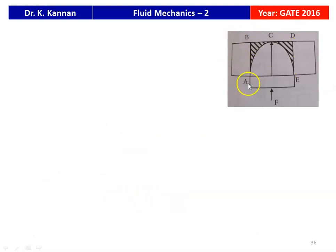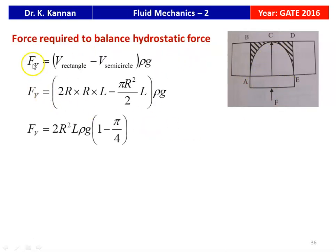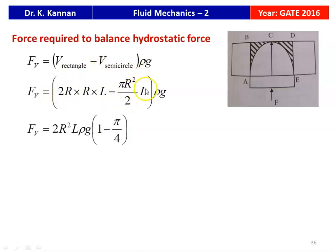Looking at the plug alone: the vertical force F_V equals the weight of liquid in the rectangle minus the weight in the semicircle, times rho times g. Volume of the rectangle is 2R times R times L; volume of the semicircle is (πR²/2) times L. So F_V equals (2R²L minus πR²L/2) times rho times g. Simplifying by taking out 2R²Lρg: F_V equals 2ρR²GL(1 − π/4). This is the upward force on the plug.